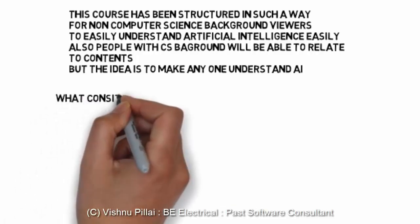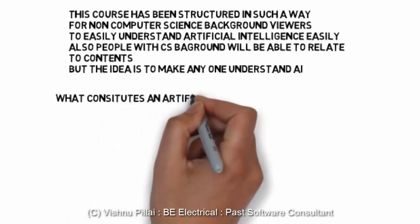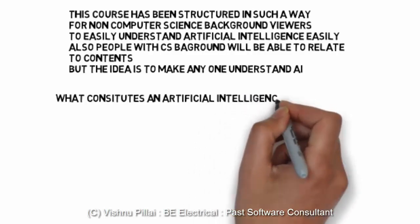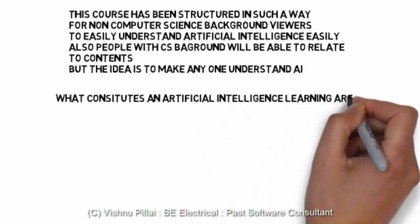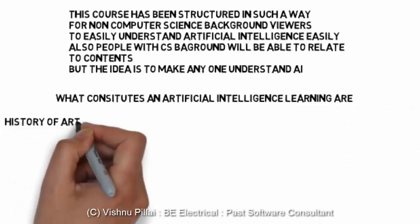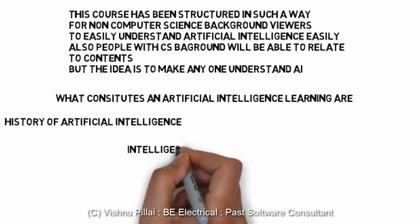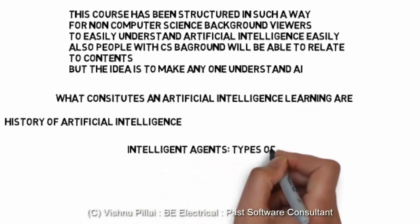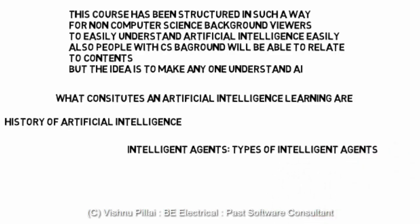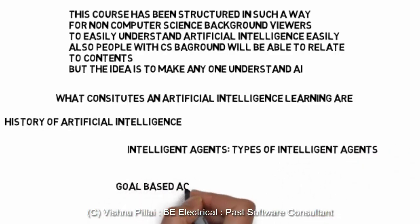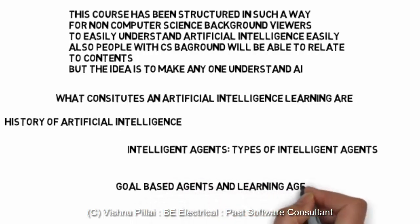This course has been structured so that viewers without a computer science background can easily understand artificial intelligence. People with a CS background will also be able to relate to the components, but the idea is to make anyone understand AI. If you have one or two hours and want to quickly get a basic understanding of what artificial intelligence is all about, this course puts the different components of artificial intelligence together so that a person can go through it quickly and get a solid overview.